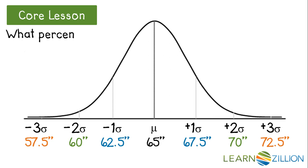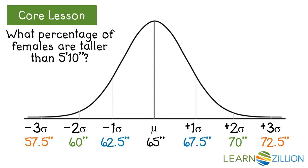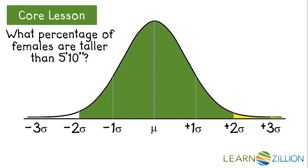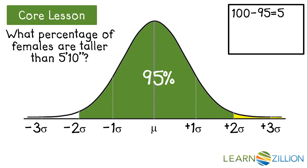Suppose we want to find what percentage of females are taller than 5 feet 10 inches. Since 5 feet 10 inches is equivalent to 70 inches, we want to look at the section two standard deviations above the mean and greater — the yellow shaded section. We know from the empirical rule that about 95% of the data falls between two standard deviations below and above the mean, so the remaining tails must add up to 5%, because 100% minus 95% leaves 5% in those two tails.